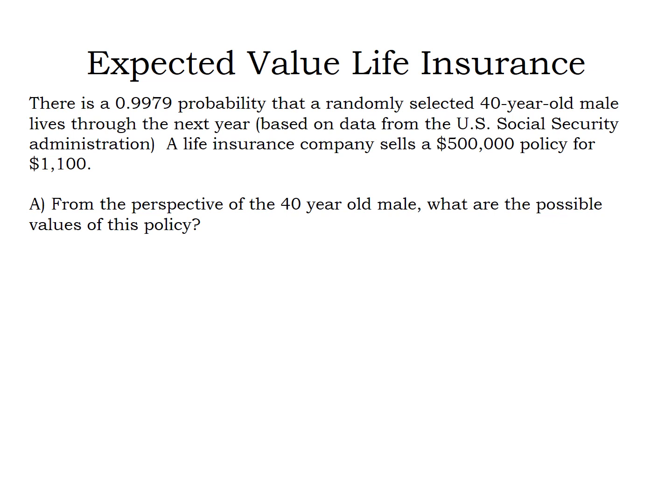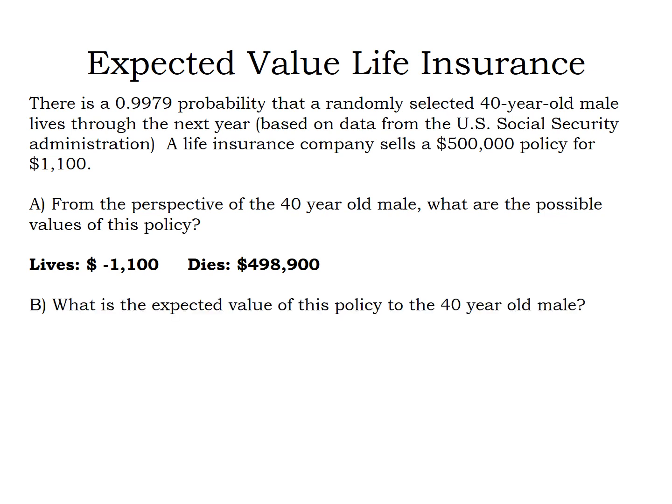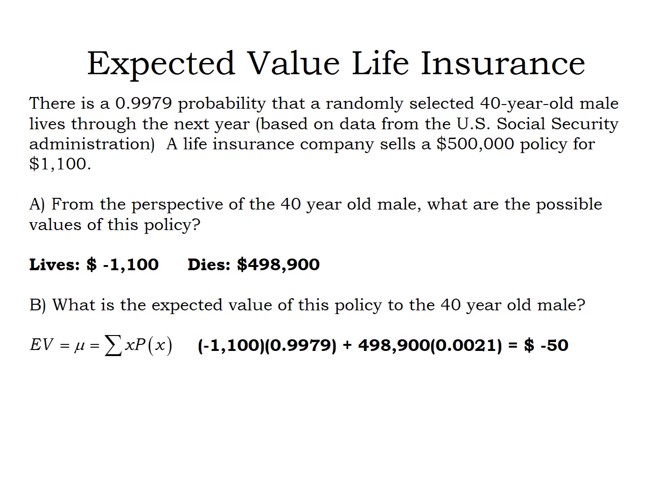From the perspective of the 40-year-old male, if he lives, he's out the $1,100 — so the policy was worth negative $1,100. If he dies, his estate gets $500,000 minus the $1,100 already paid, so the policy is worth $498,900. The probability of living was given as 0.9979, so the probability of dying is 0.0021. To find the expected value — which equals the population mean — we take negative $1,100 times 0.9979, plus $498,900 times 0.0021, and that averages out to negative $50.